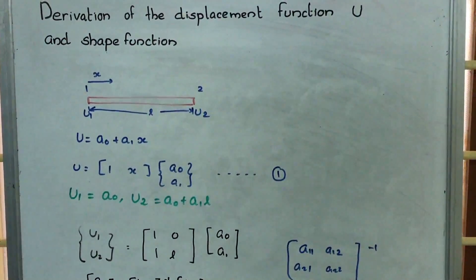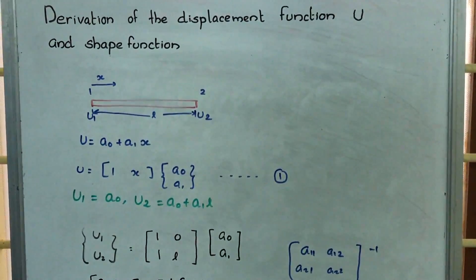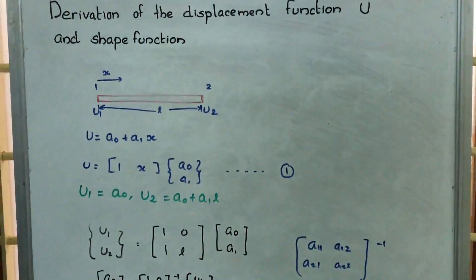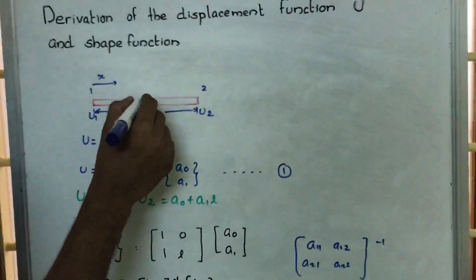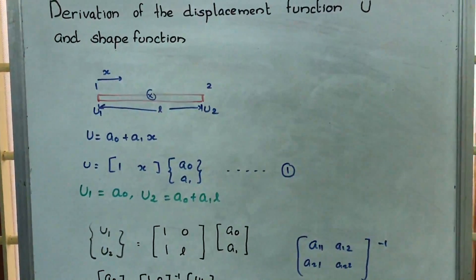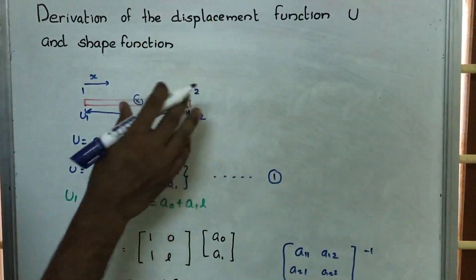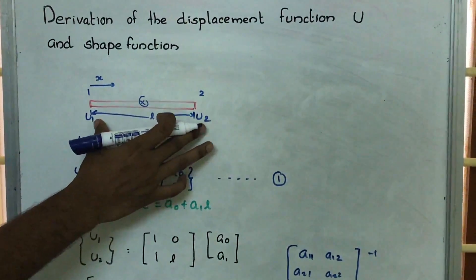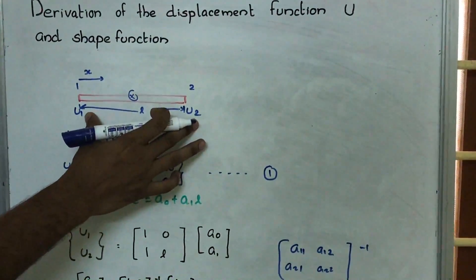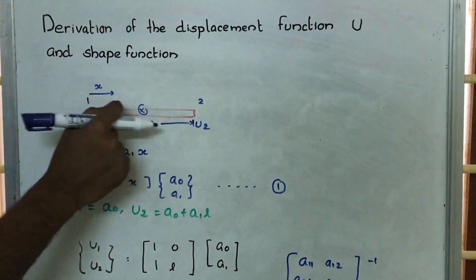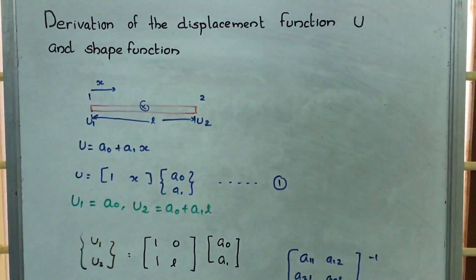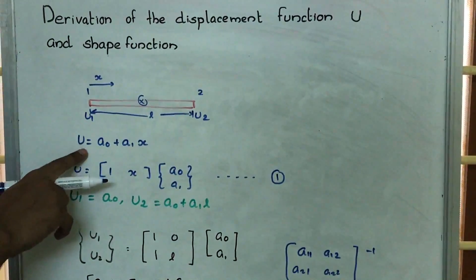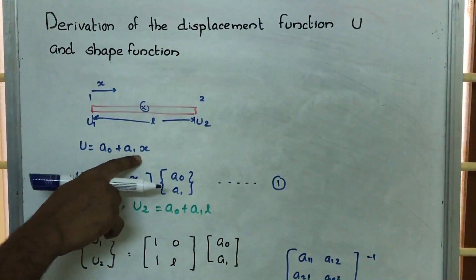Our objective is to find the displacement at any point along the beam. At the end points, if the displacements are given, we are going to find the displacement at any intermediate point. So arbitrarily we are choosing that displacement u is equal to a0 plus a1*x.